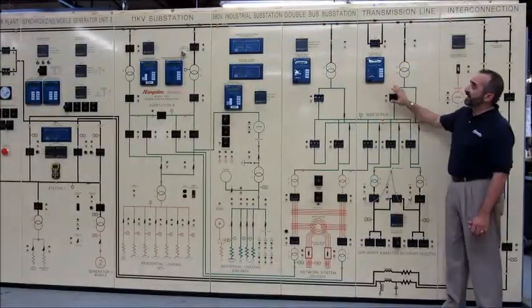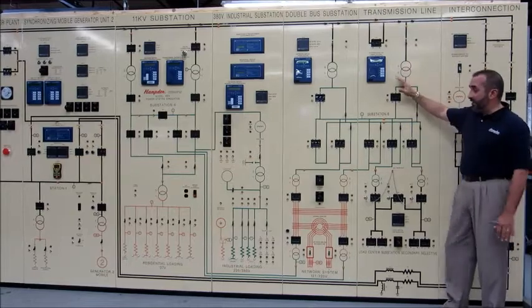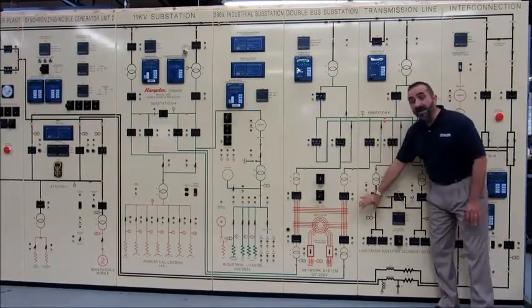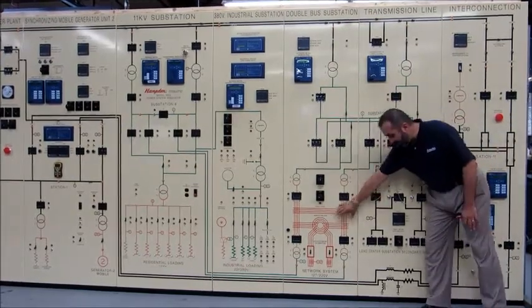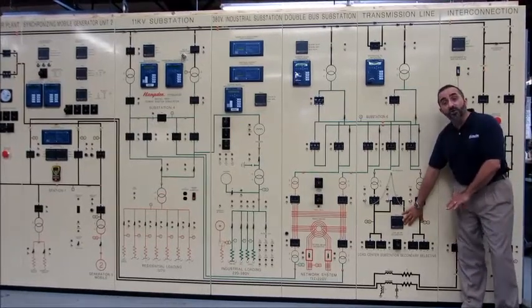Panels five and six are a double-bust substation, which supply a commercial load and a selected secondary industrial load,